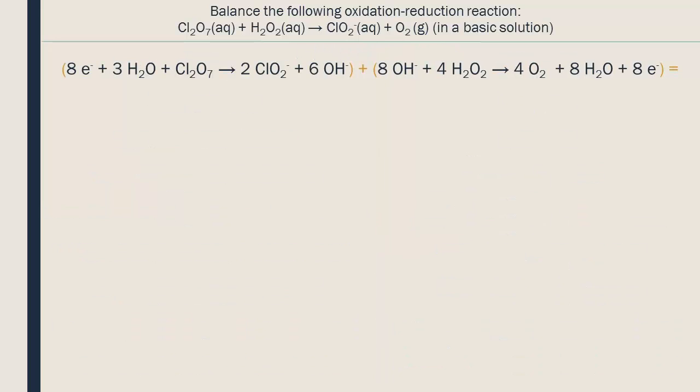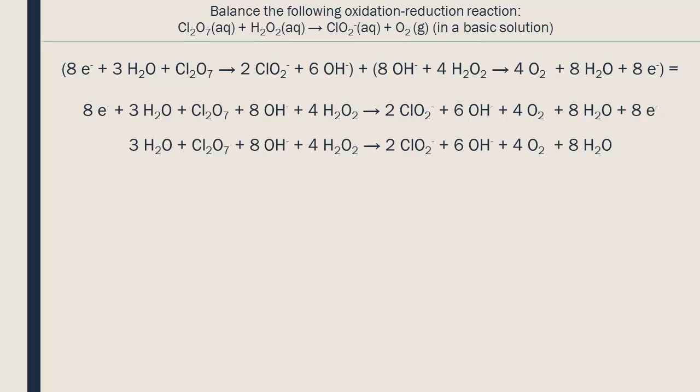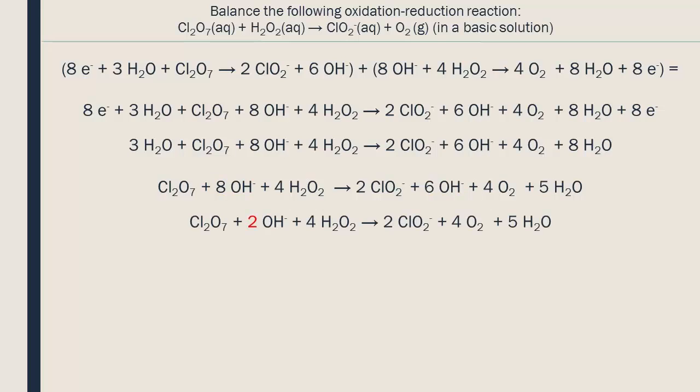Now, we can reassemble the two half-reactions. We simplify the molecules and electrons that are present on both sides of the reaction. We cancel the electrons on both sides. We have three waters on the left and eight on the right, so we subtract three from both sides to finish with five waters in the products. We have eight OH- ions on the left and six on the right, so we subtract six from both sides and finish with only two in the reactants.